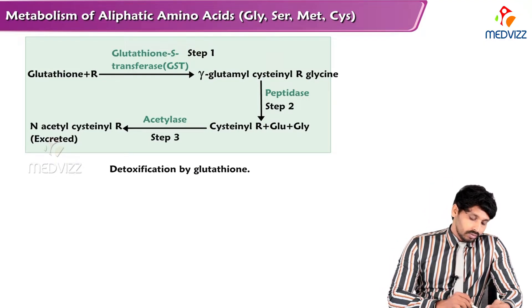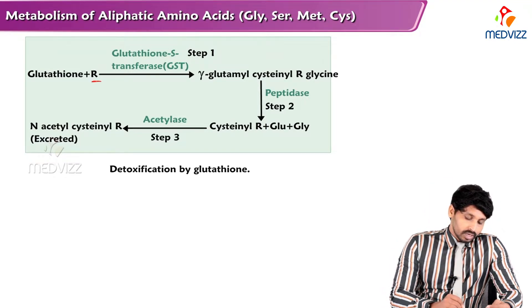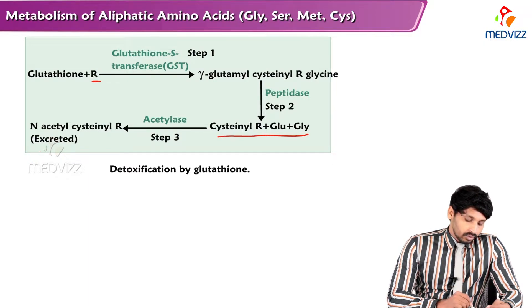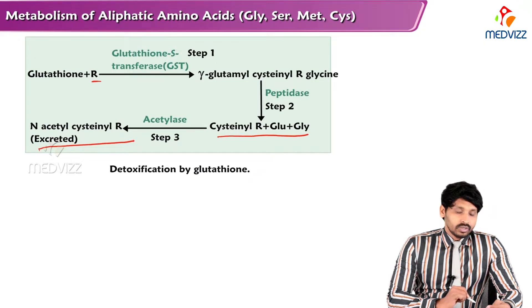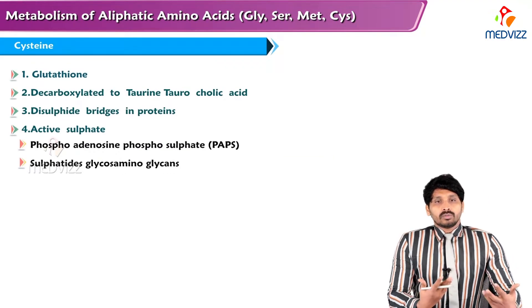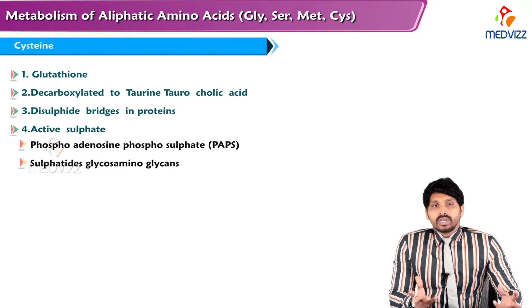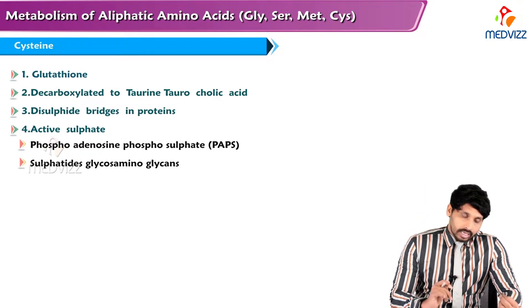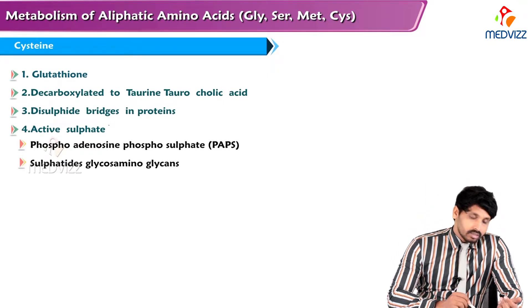For detoxification by glutathione: when glutathione combines with a foreign product, it forms gamma-glutamyl-cysteinyl-R-glycine, and with the help of epoxidase it is converted to cysteinyl-R plus glycine, and finally to N-acetyl-cysteinyl-R, which is easily excreted in the urine. Glutathione is also involved in decarboxylation forming taurine, taurocholate bile acids, and disulfide bridges in proteins.